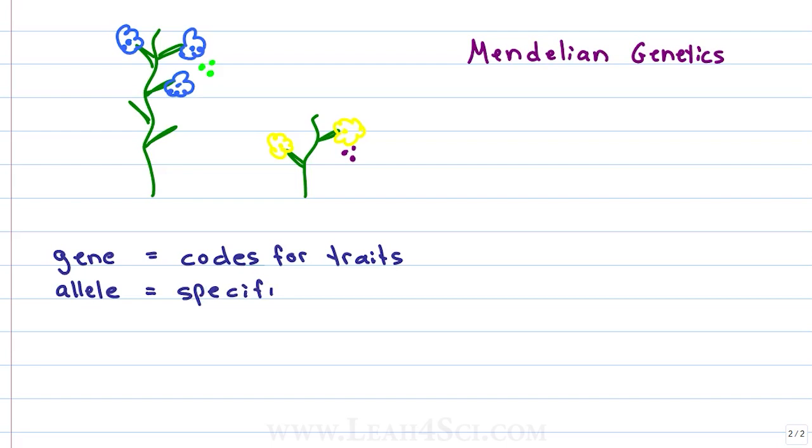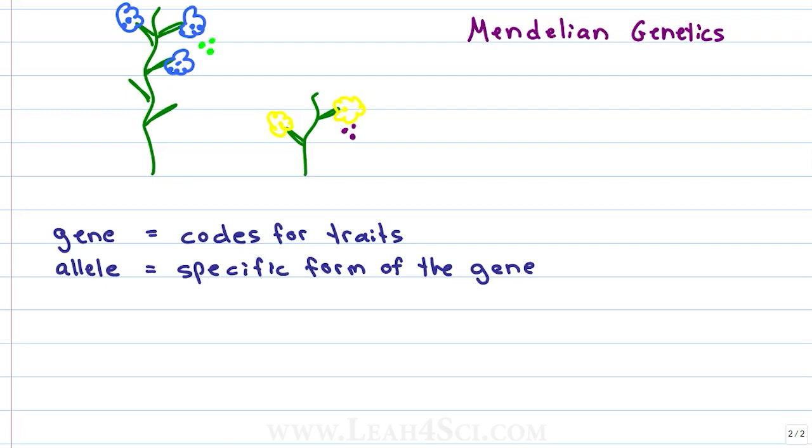Take a look at the two plants here. Each plant has a gene that codes for flower color, but the first plant has an allele that makes it present a blue color. The second plant has an allele that makes it present a yellow color. The alleles give us specificity, but the gene codes for that specific thing, in this case flower color. The colors that I've drawn here tell us the phenotype of each plant.